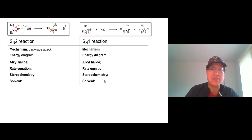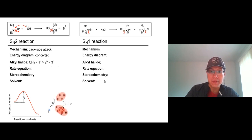The mechanism is a backside attack. The energy diagram is just one-step reaction - backside attack, you get the product right away, so it's concerted. For the alkyl halide, the smaller the better. Sterically hindered tertiary alkyl halide never does an SN2 reaction, and alkyl halide on a double bond (we call vinyl alkyl halide) doesn't do SN2 reaction either.